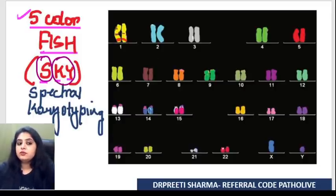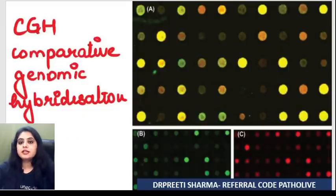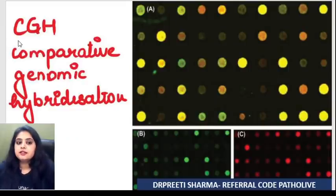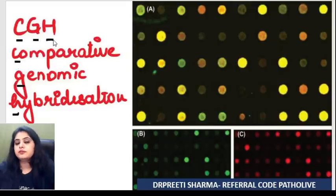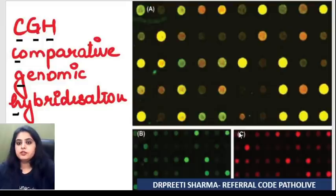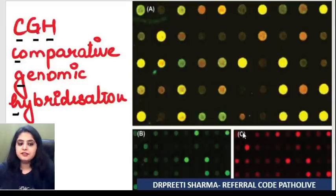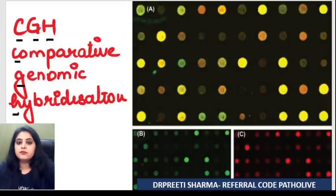Having done with everything to do with FISH, now let's come to the next technique — CGH: Comparative Genomic Hybridization. There is a typical red-yellow-green color coding that we need to crack. Focus on the name — you are going to compare genes.